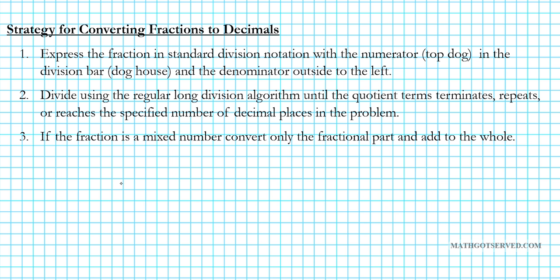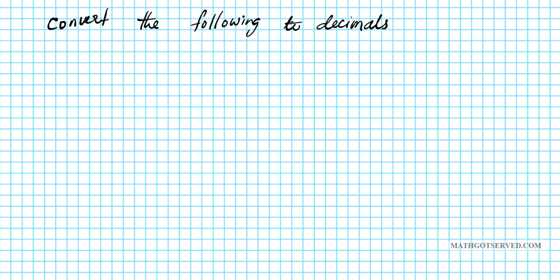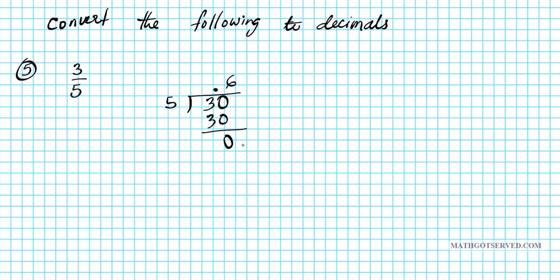Problem number five: convert 3 over 5 to decimal. Write it in standard long division notation — the numerator goes inside and the denominator goes outside. Five doesn't go into 3, so place a decimal point and add a zero behind the 3. Five goes into 30 six times. Six times five is 30, remainder zero. It terminates, so 3 over 5 equals 0.6.